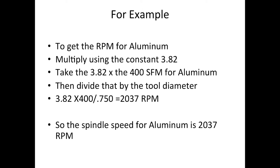So for example, to get the RPM for aluminum, we're going to multiply using that constant 3.82 times the 400 surface feet per minute for aluminum, then divide by the tool diameter. Using a 3/4 inch end mill: 3.82 times 400 divided by 0.750 gives us a spindle RPM of 2037.